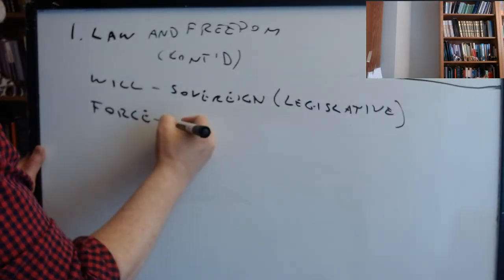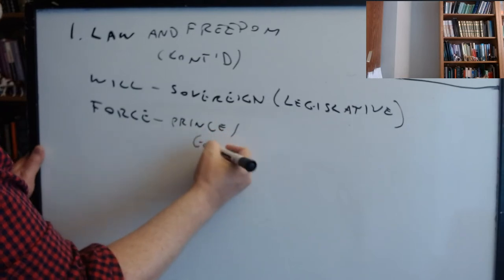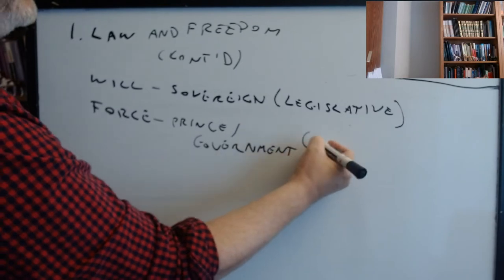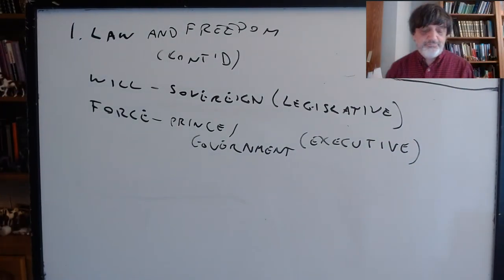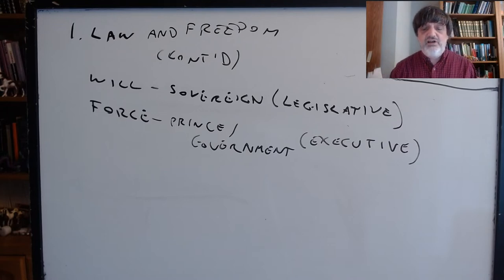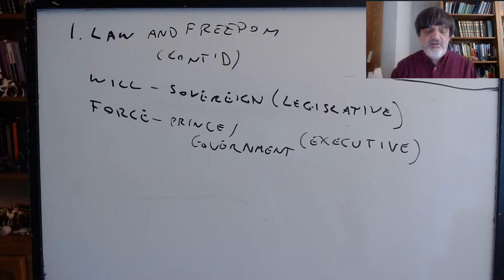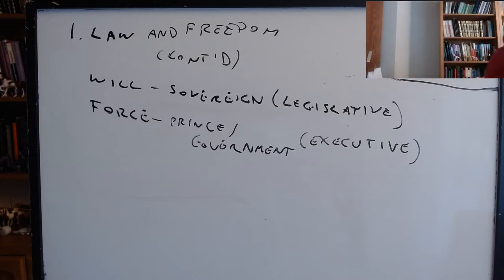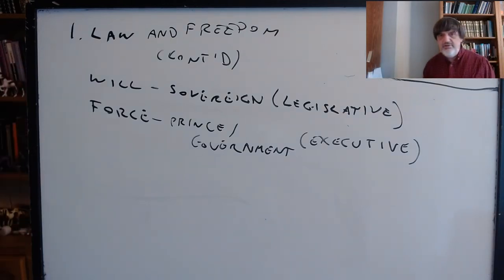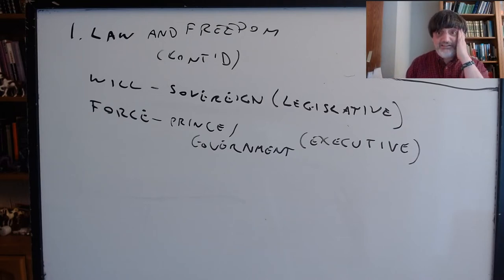At the beginning of Book Three, this distinction between will and force is identified with the distinction between the legislative and the executive — that is, between the sovereign and the prince, and the government. What would make this analogy work? I'm not sure if Rousseau thinks this is a metaphor or if it's literally will versus force. But in any case, if you think about the simple case of an individual...